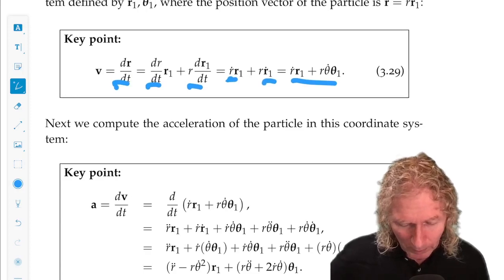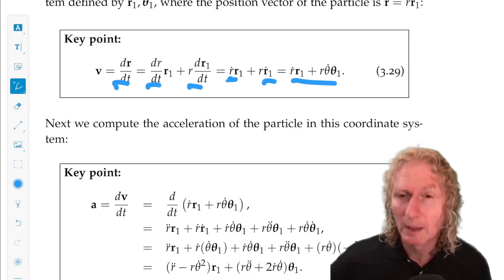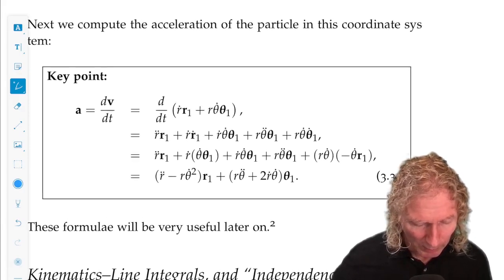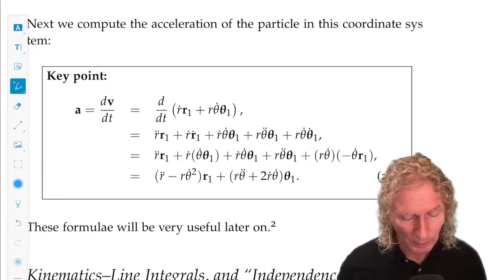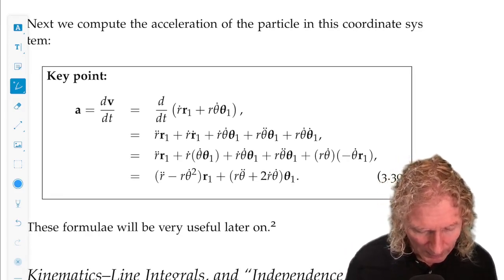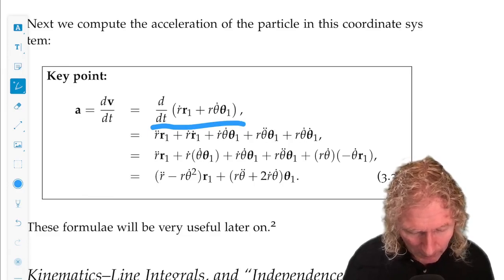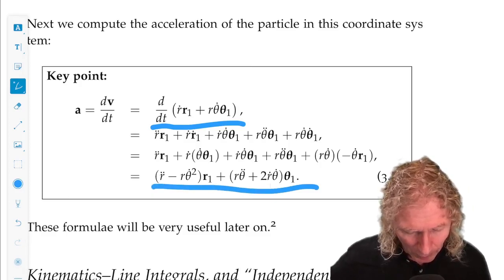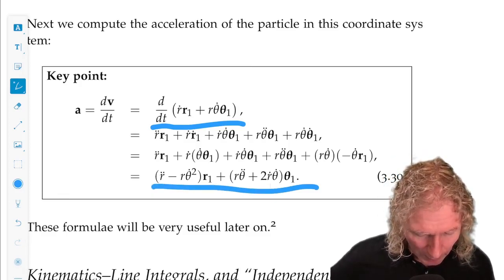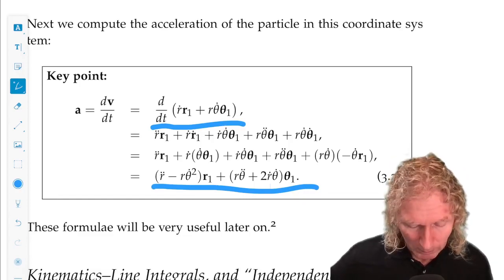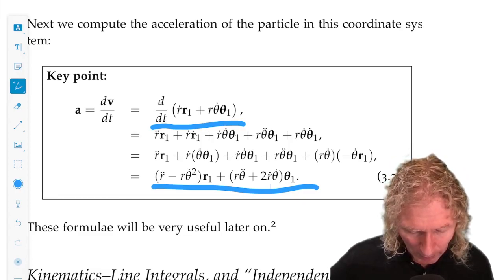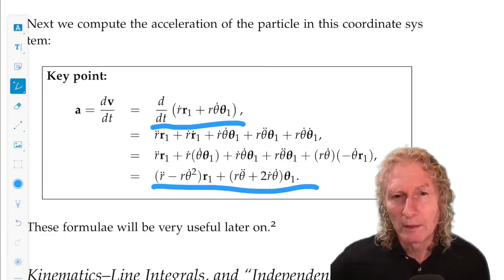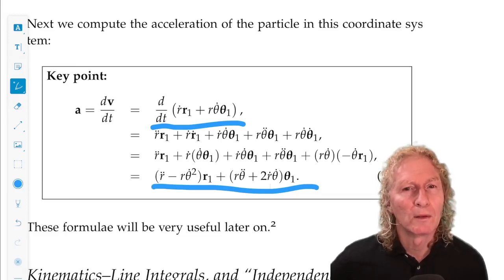So for velocity, we have a radial component and an angular component. And the time derivative of velocity, or the acceleration, we do exactly the same thing - it's a bit more involved. But now we have also a radial component, r double dot minus r theta dot squared, and an angular component acceleration, r theta double dot plus 2 r dot theta dot. So I will leave it at that for the moment for these terms.